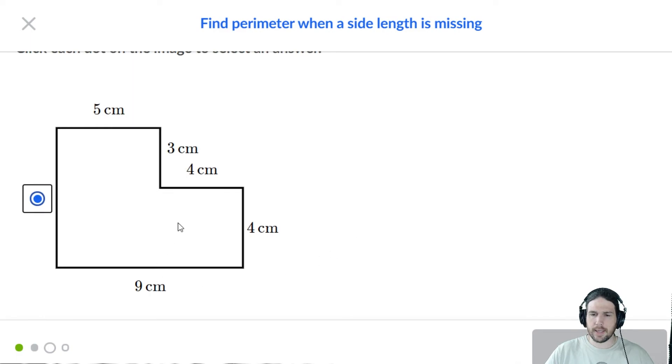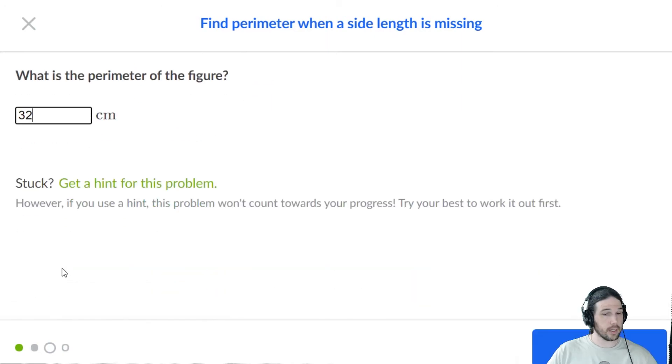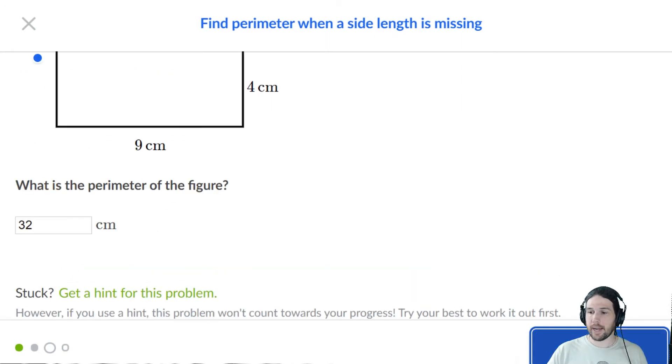So nine and seven is 16, 17, 18, 19, 20, 21, 24, 28, 29, 30, 31, 32. I think I got 32. I'm not entirely confident in my counting right now. Got that one right. Very nice.